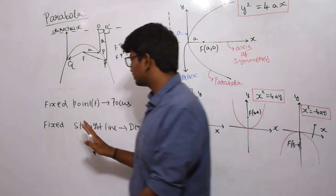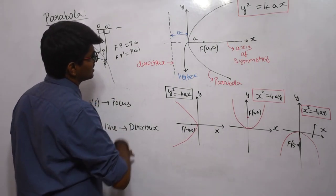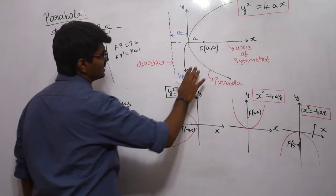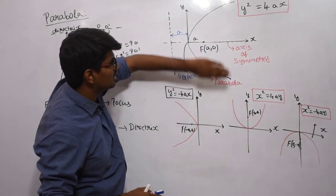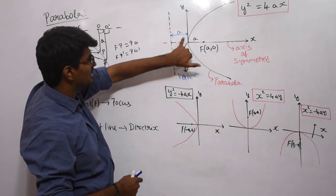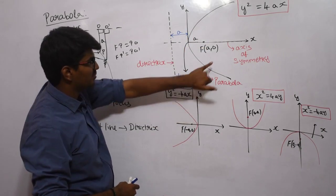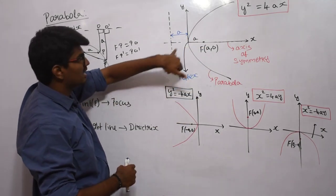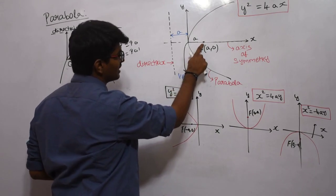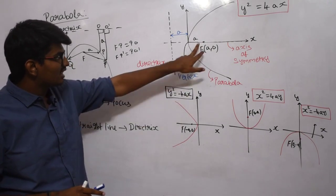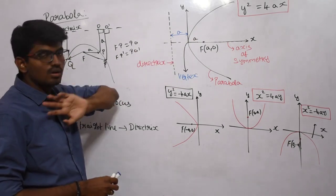The distance from the directrix to the point should be the same as the distance from the point to the focus. The fixed point is the focus and the fixed straight line is the directrix. The axis of symmetry means the curve above is the same as the curve below. The tip of the parabola is said to be the vertex. The directrix is placed at a distance A from the vertex, and the focus F is also placed at the same distance A from the vertex.